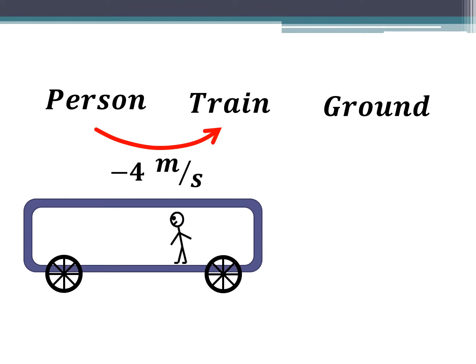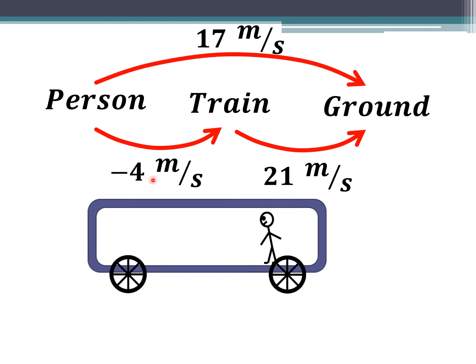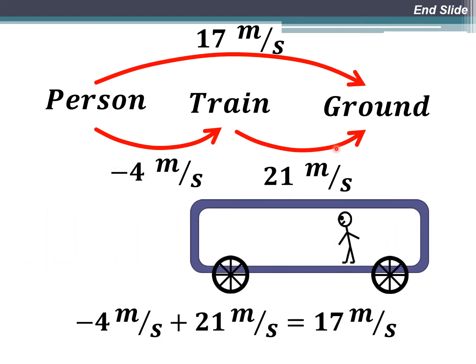In this next example, the person is moving in the opposite direction at negative 4 meters per second relative to the train, and the train is still moving at 21 meters per second relative to the ground. Since the person's moving in the opposite direction, when you add the two vectors together you get negative 4 plus 21, which gives a total of 17 meters per second. Switching the direction switches the sign, so you must include direction when adding vectors.